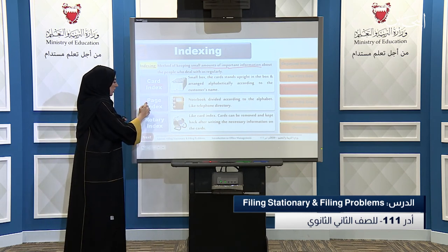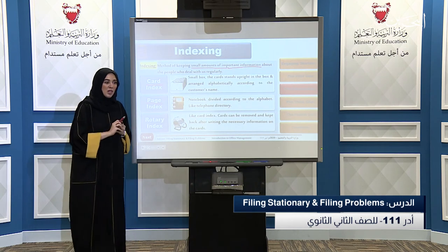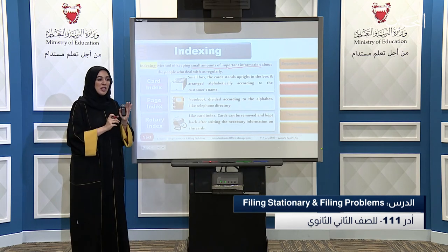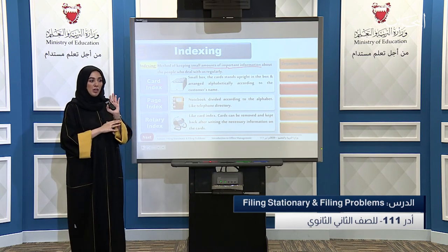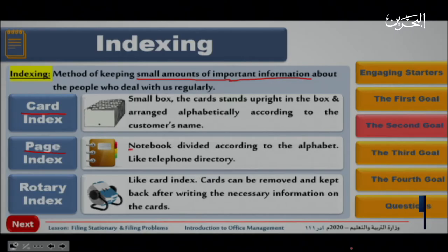The second type is page index. Page index is like a book or a notebook divided according to the alphabet, like a telephone directory. It runs from A to Z, and you write the information of the person behind their corresponding letter.